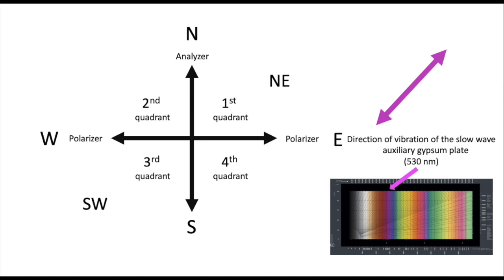First, you have to keep in mind that the gypsum plate is inserted oriented in such a way that it has the plane of lowest velocity aligned with the north-east-south-west orientation at 45 degrees from both polarizer and analyzer directions, or along the first and third quadrants, as you prefer.